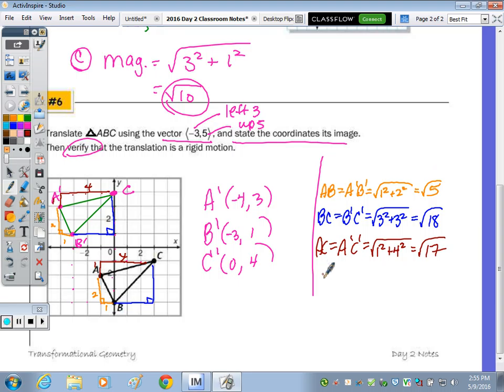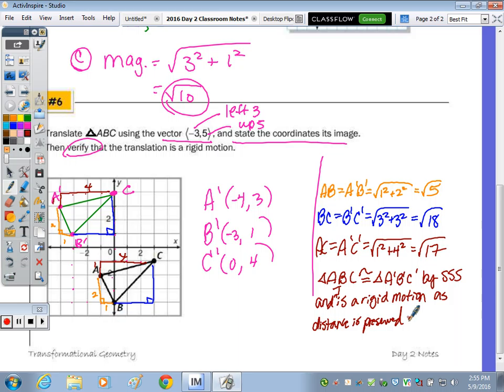So to summarize, triangle ABC is congruent to triangle A prime B prime C prime by the side, side, side postulate. And the translation is a rigid motion as distance is preserved.